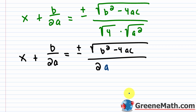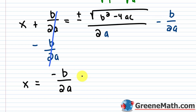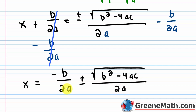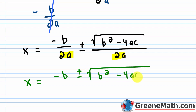To finish, subtract b/2a from each side. That cancels on the left. Rearranging, we get x equals negative b/2a plus or minus the square root of (b² − 4ac) over 2a. With the common denominator of 2a, this becomes x = (−b ± √(b² − 4ac)) / 2a. That's the quadratic formula.